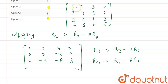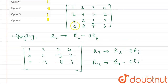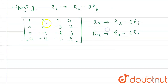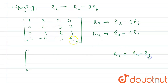Now applying R4 → R4 - 6R1: we multiply row 1 by 6 and subtract from row 4. So 6-6=0, 8-12= -4, 7-18= -11, and we keep 5. Row 4 becomes [0, -4, -11, 5].